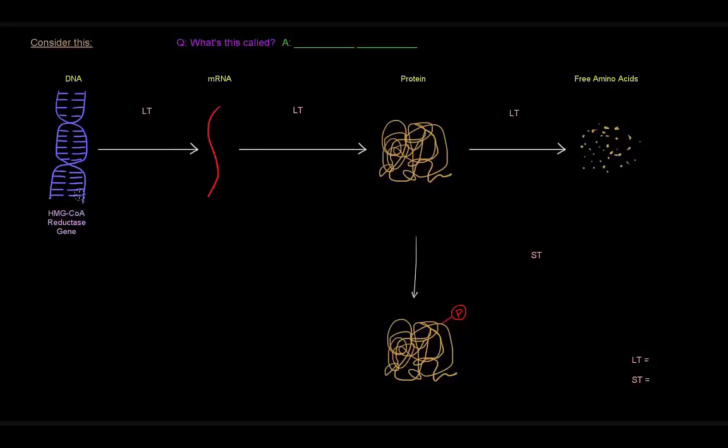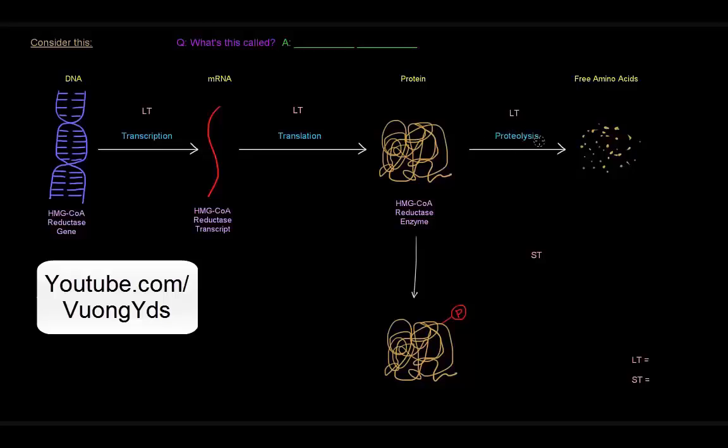And this gene for the HMG-CoA reductase can be transcribed into an mRNA transcript, and that transcript can be translated into the protein that is the actual functional enzyme. Now, that protein can be degraded via proteolysis to give just a bunch of free amino acids.